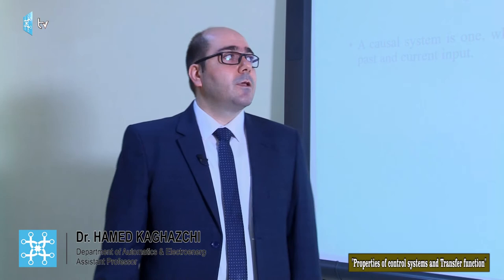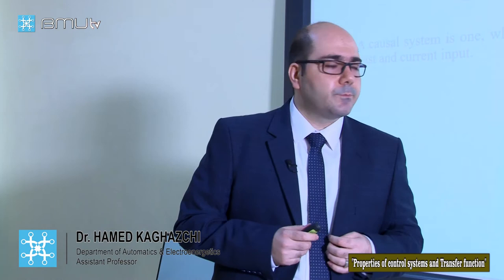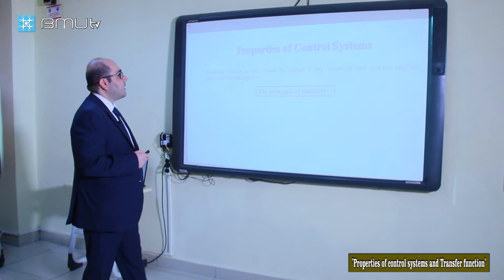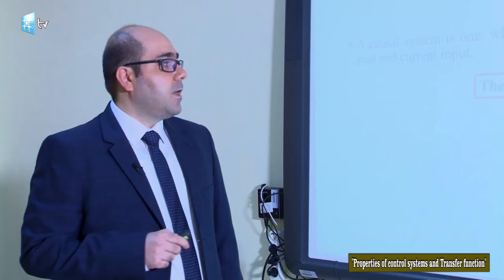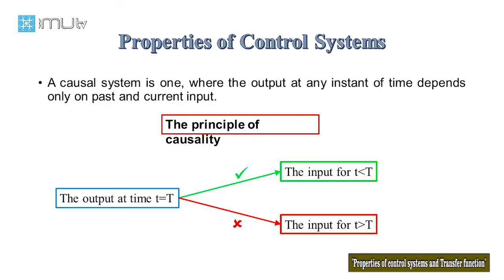Hello dear students. Today I would like to talk about some properties of control systems and also the transfer function. Let's start. One of the properties of a control system is the principle of causality. What is the meaning of causality, and what kind of systems are causal? Control systems are causal systems.